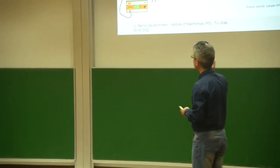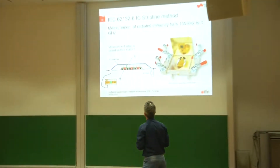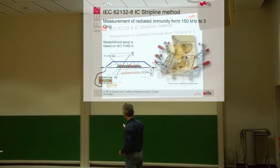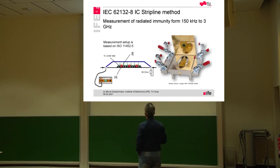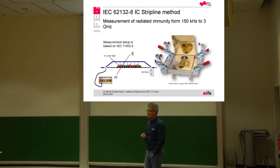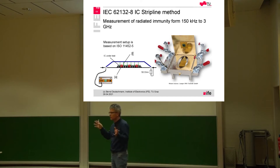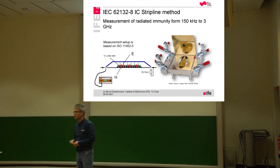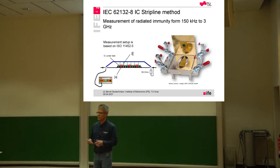The latest measurement technique available is the IC stripline method, defined in part 8 of the IEC 62132 standard that we have already discussed. The very big advantage of this IC stripline technique is the higher frequency range — we can characterize from 150 kilohertz up to three gigahertz, maybe four or five gigahertz.